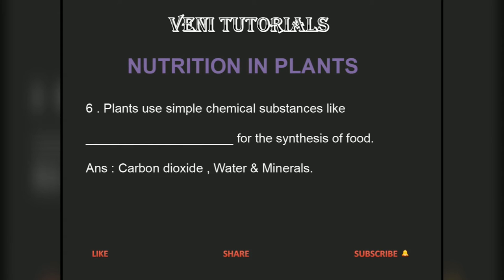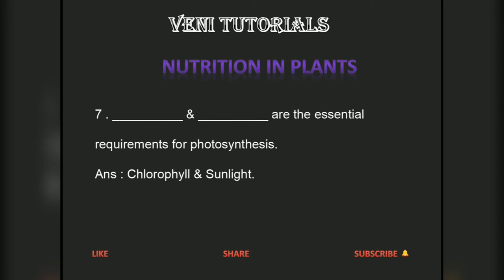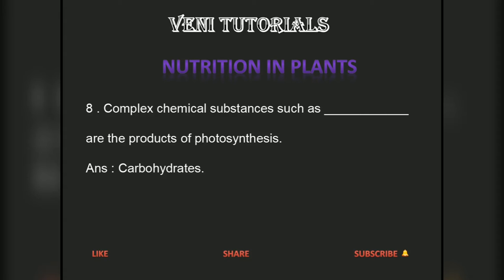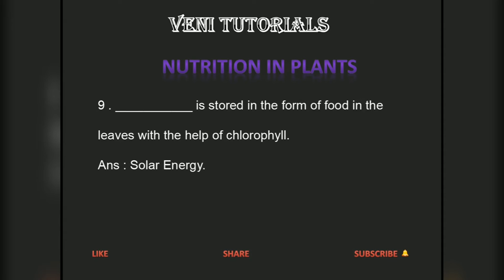Plants use simple chemical substances like carbon dioxide and water for the synthesis of food. Carbon dioxide and water are the essential requirements for photosynthesis. Food is stored in the form of starch in the leaves with the help of chlorophyll.